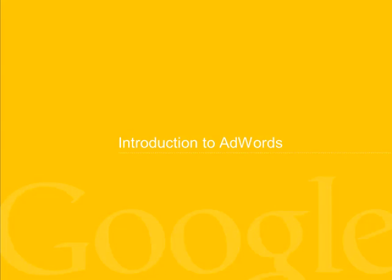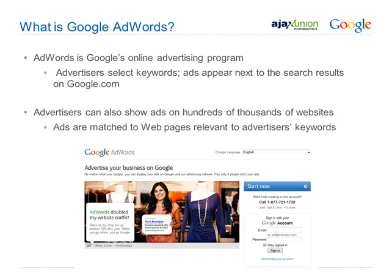Here is an introduction to Google AdWords. So what is Google AdWords? Google AdWords is an auction. Advertisers compete against each other in the auction to have their ads appear when people search on particular keywords. In today's presentation, we will get into the details about the auction and how to make your ads more competitive.